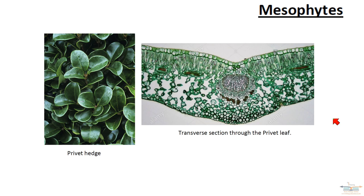It does have stomata on the lower surface. Because mesophytes live in an environment where there's an adequate supply of water — they're not living in water, but they're not totally dry either — the plant still needs to try and restrict or reduce the amount of water loss at certain times. This is where the stomata come in, and they're able to close to reduce water loss and allow the plant to absorb water from the soil to replenish any water that's been lost.